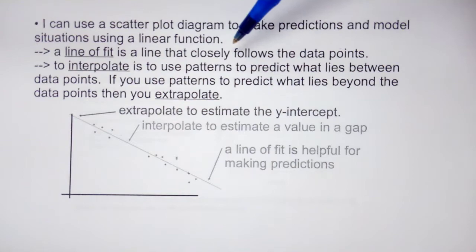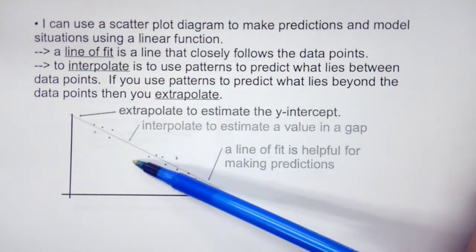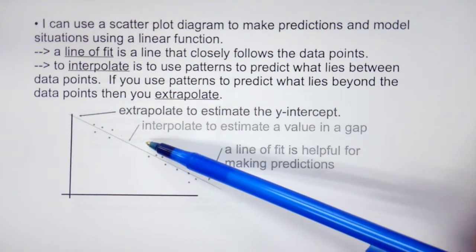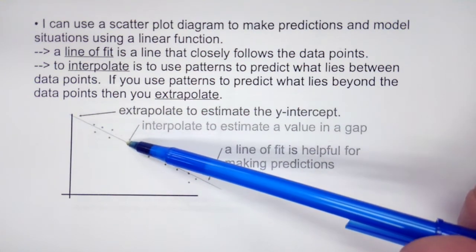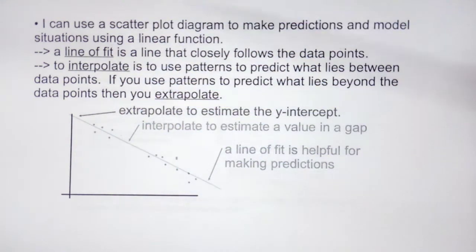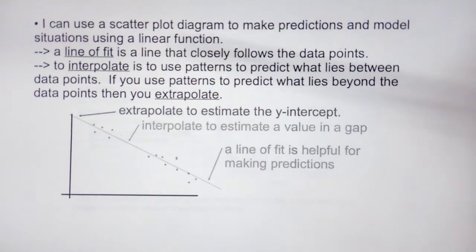Interpolate is to use patterns to predict what lies between data points. So interpolate right here, we have a gap in our data. Interpolate is to estimate one of these given values based on the data points that are on that line of best fit. And then if you use patterns to predict what lies beyond the data points, it's extrapolate.